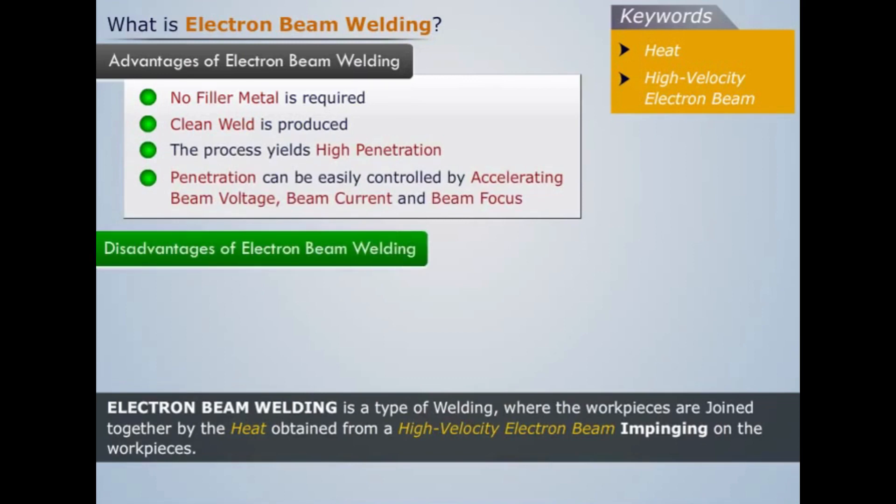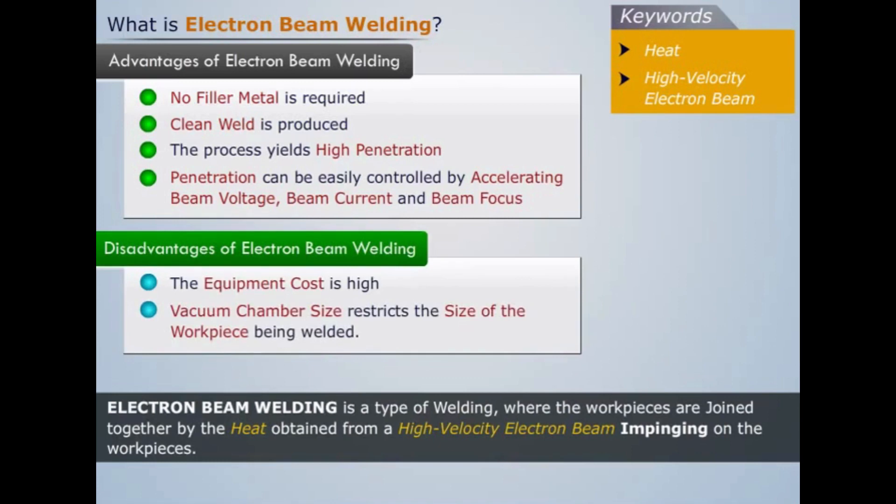Some of the main disadvantages of electron beam welding are as follows: The equipment cost is high. Vacuum chamber size restricts the size of the workpiece being welded.